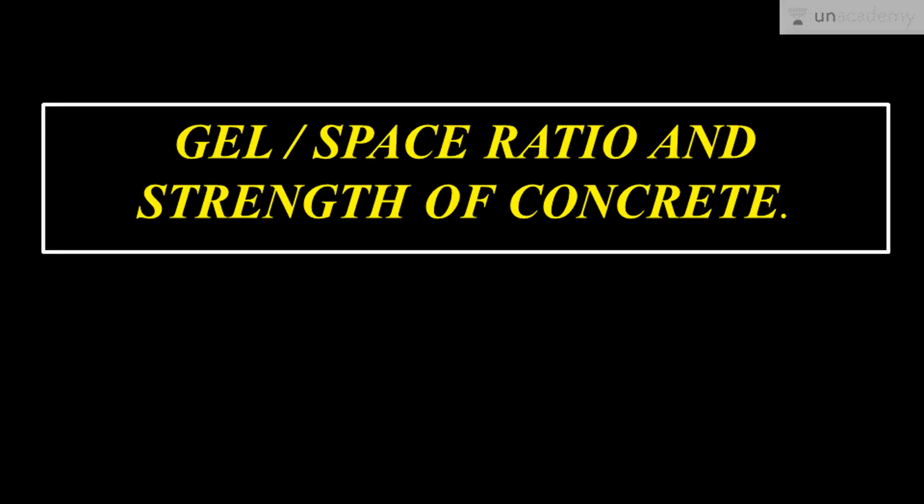Hello everyone, good to see you. This is another lesson based on the gel space ratio and the strength of concrete. Previously we have seen what gel space ratio is, how it came into existence, the Powers equation, and the calculation for the gel space ratio and strength of concrete with an example problem. In today's lesson we are going to see how Griffith theory explains the flaws in concrete and how it influences the strength of concrete.